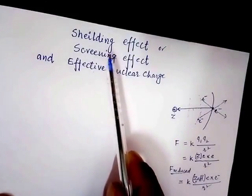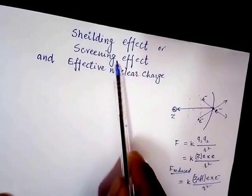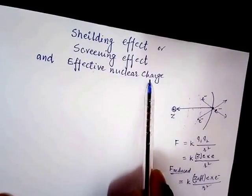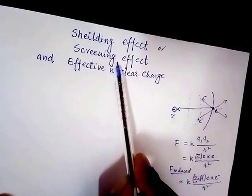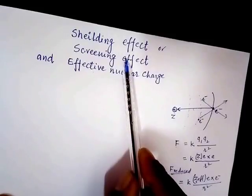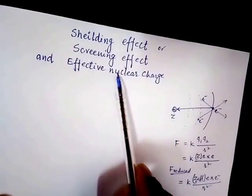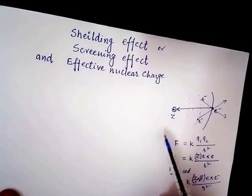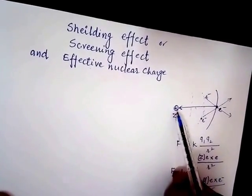In this video we are going to explain the terms shielding effect, screening effect, and effective nuclear charge. These terms are very important. Shielding effect and screening effect both mean the same thing. To explain these terms, we are taking a very simplified model of an atom.